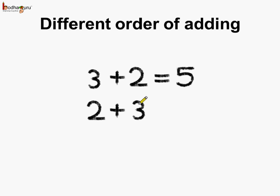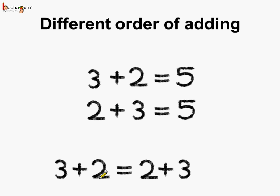So if we reverse the order and write 2 first, then 3, and make it as 2 plus 3, what is the result? The sum is again equal to 5. So what does it show? It shows that 3 plus 2 is equal to 2 plus 3, which is equal to 5.